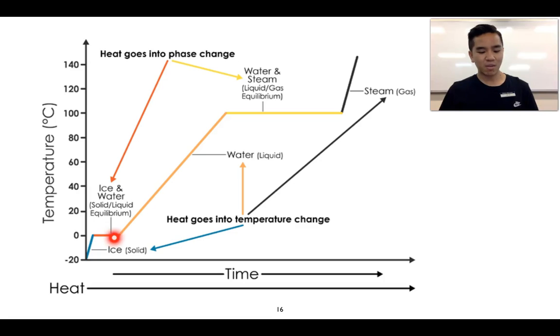And then once it's turned into liquid, that's when the temperature starts to increase as we're adding heat. We will get that to the point where it reaches its boiling point, which is 100 degrees Celsius. And so we get that combination of liquid forming those bubbles of gas.